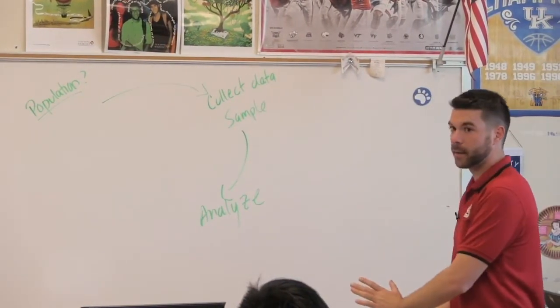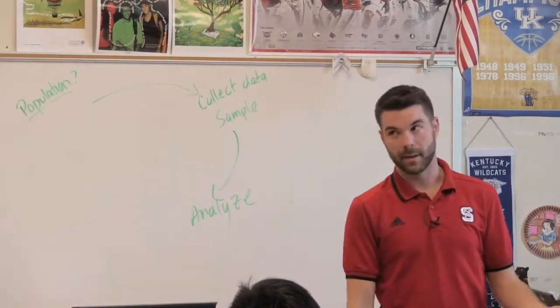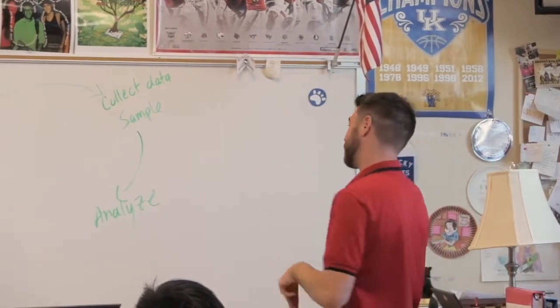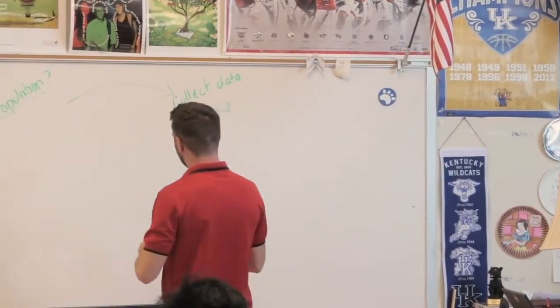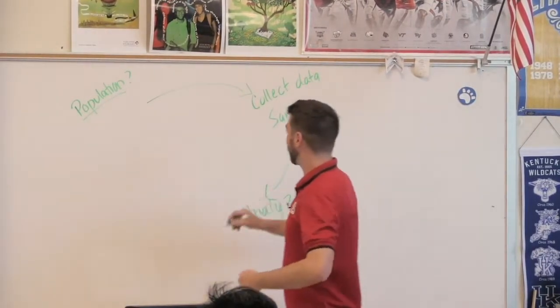And with bivariate data, what do we do? DOVS: direction, outlier, form, and strength. So we're going to look at that, and this is literally the rest of this class.